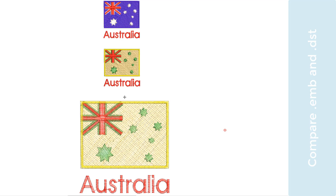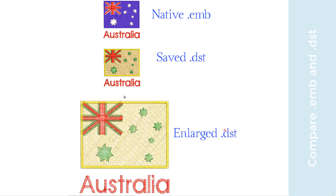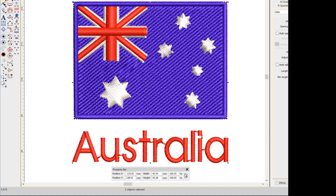In this video I'd like to compare EMB files with machine files. Recently three separate designs were sent to me. They are actually the same design: one file is a native EMB or vector file, the other two are DST or machine files. The first DST is the same size as the original EMB and the third file is an enlarged version of that DST. Comparing each has brought up a number of topics I think are worth talking about.